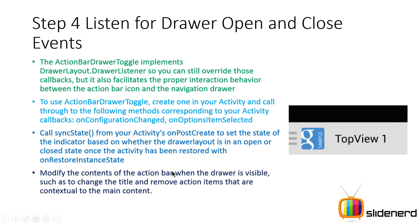The next thing to do is modify the contents of the action bar when the drawer is visible — like changing the title and removing contextual action items. By contextual, I mean: if you open the file manager, select a file, and long-press it, options like cut, copy, and paste emerge in the action bar. When you open the navigation drawer, you want to hide those contextual actions temporarily until the drawer is closed. So you've got to make sure the action bar contents are modified accordingly.